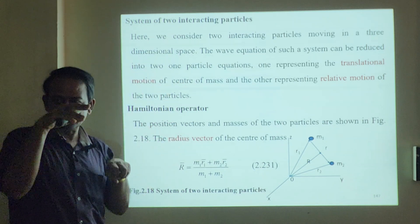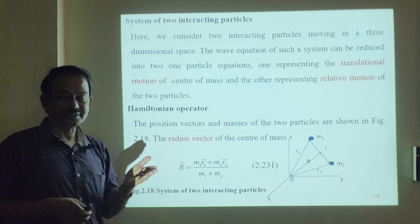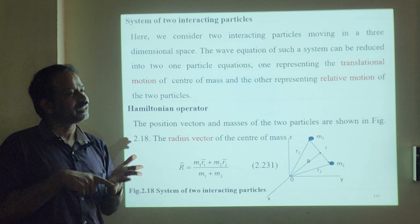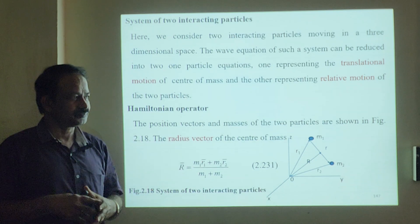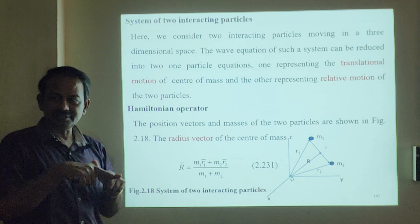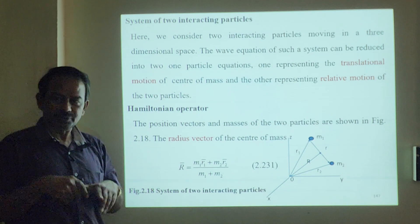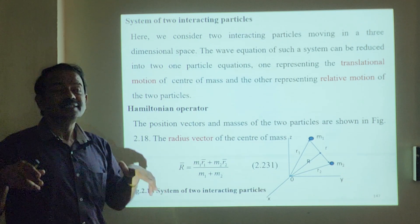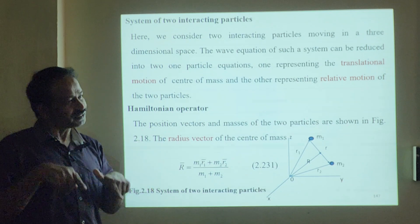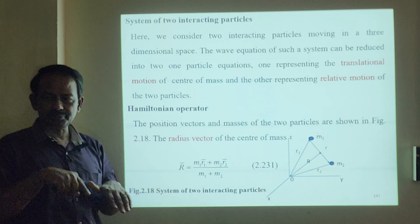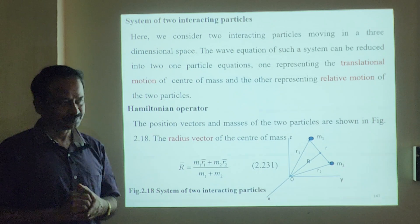We use separate capital R and small r. In the earlier session, we calculated r, theta, phi separately. Psi is a function of r, theta, phi — correct? So we have separated. Similarly here, the solution will be psi, which depends on both factors: capital R and small r.